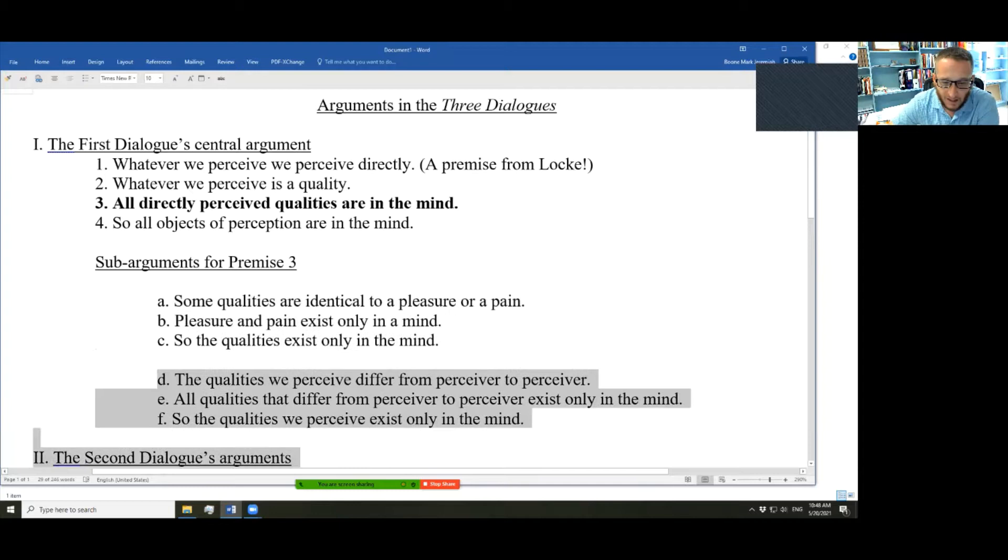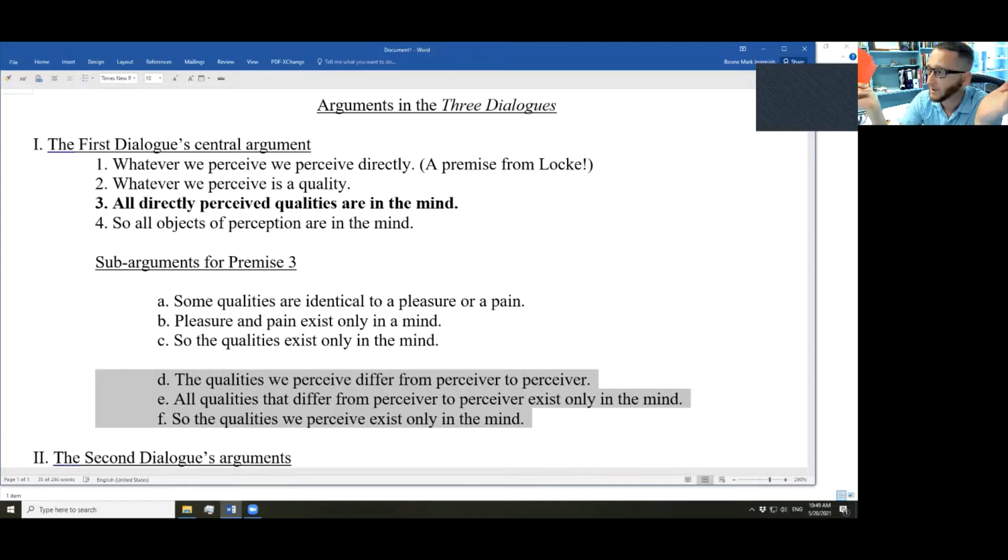Next, the qualities we perceive differ from perceiver to perceiver. As I'm seeing red, and who knows what the cameras might do to change the light wavelengths from this folder to the camera or from your computer screen to your eyes. But if we were in the same room, no cameras, no videos involved, nothing at all except the air between the eyes and the red folder. If we were in the same room looking at the same red folder, I would see a particular shade of red.